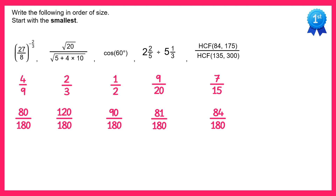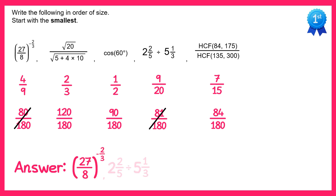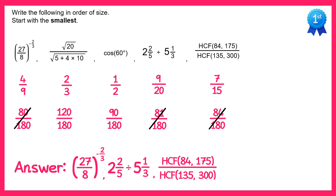It's now very easy to see which one's the smallest — that will be 80 over 180, which was (27/8) to the power 2 thirds. Next we have 81 over 180, which was 2 and 2 fifths divided by 5 and a third. Then we have 84 over 180, which was the highest common factor one. Second to last we've got cos 60, and finally 120 over 180, which is the square root expression.